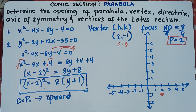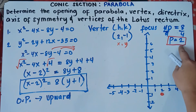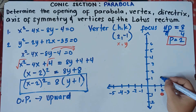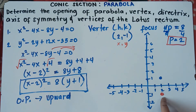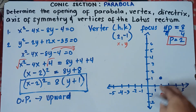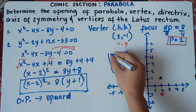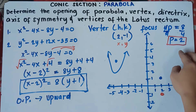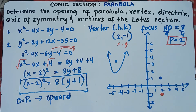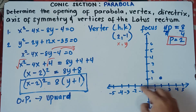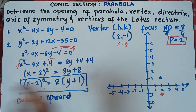Once you have the vertex, you can find the focus. Since P is positive 2, starting from the vertex you move 2 units upward. So the focus is 2 units above the vertex — remember, the focus should always be inside the parabola since the parabola opens upward.